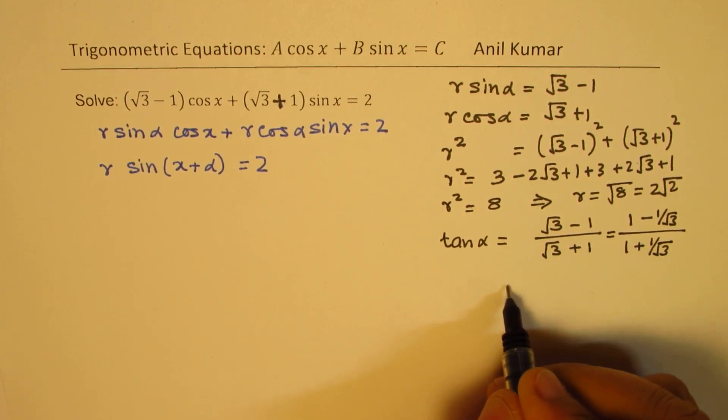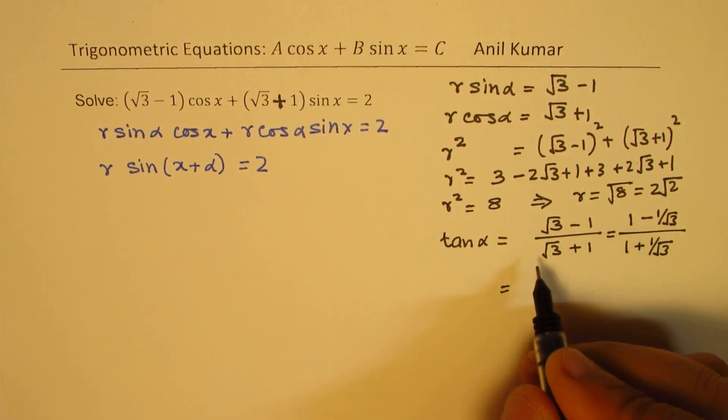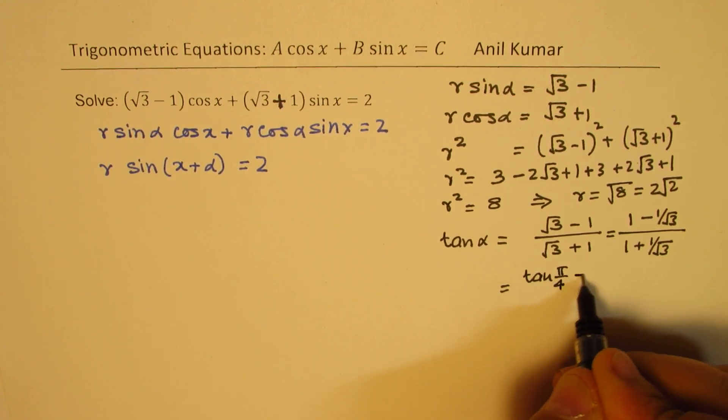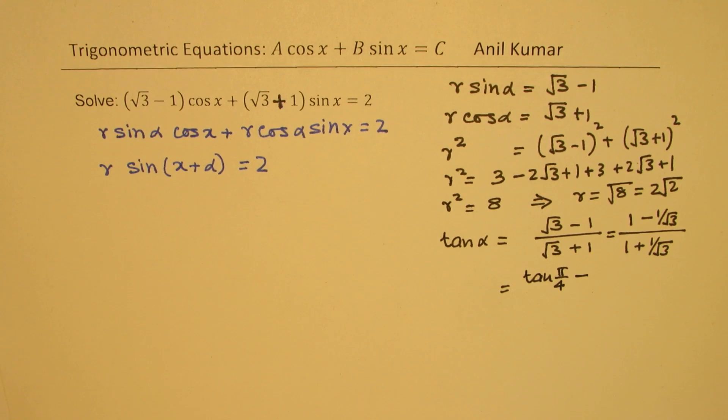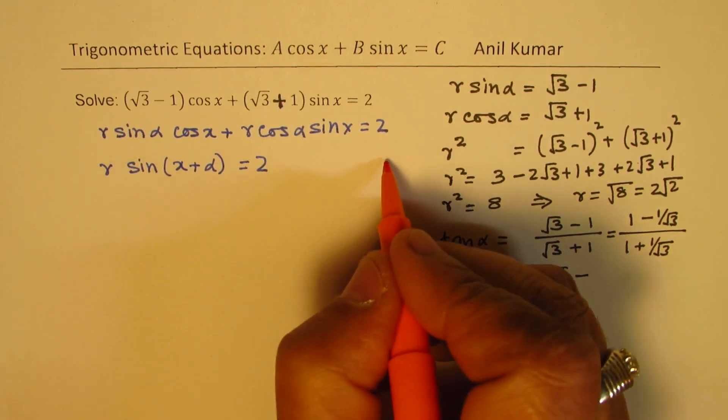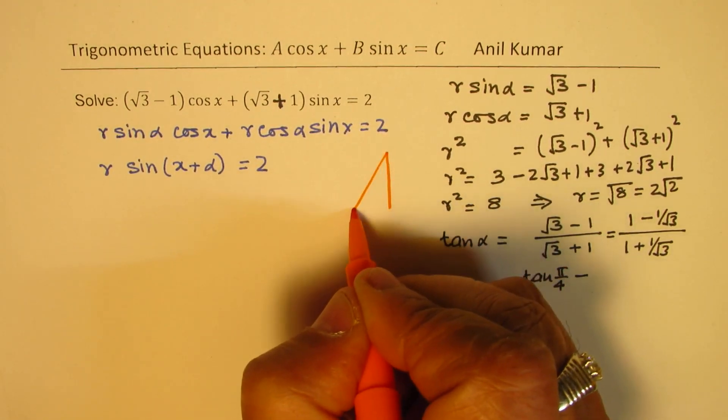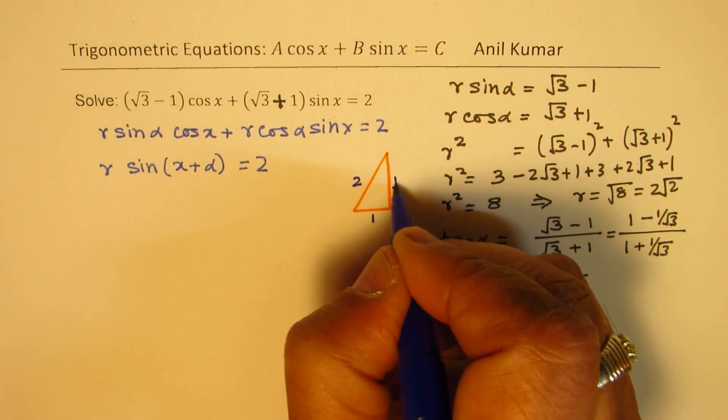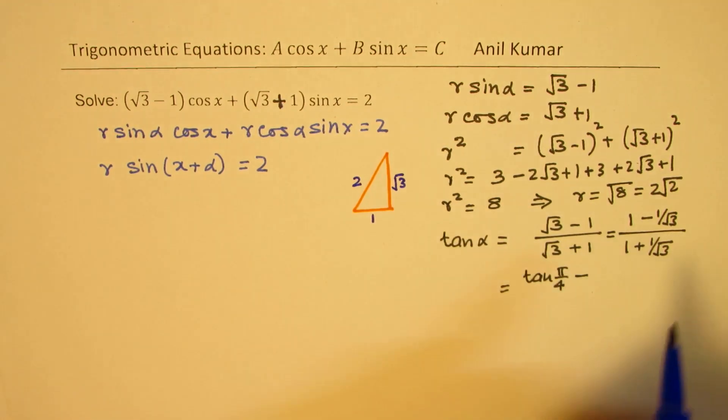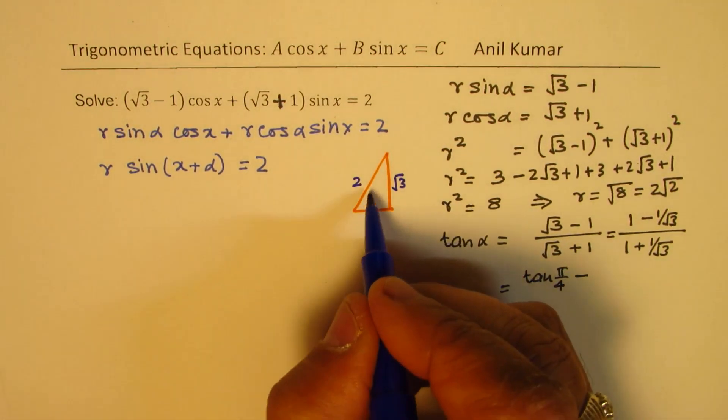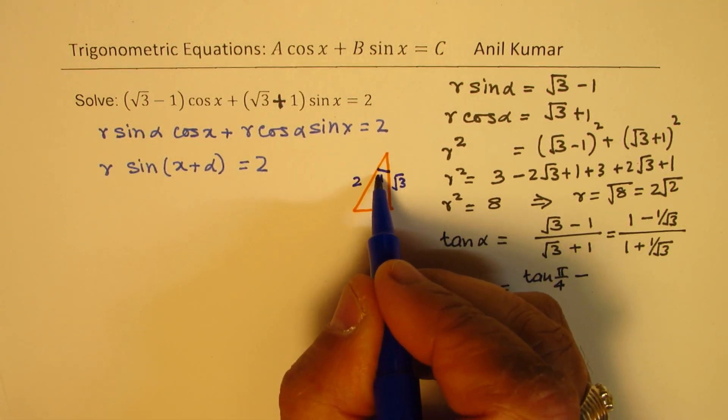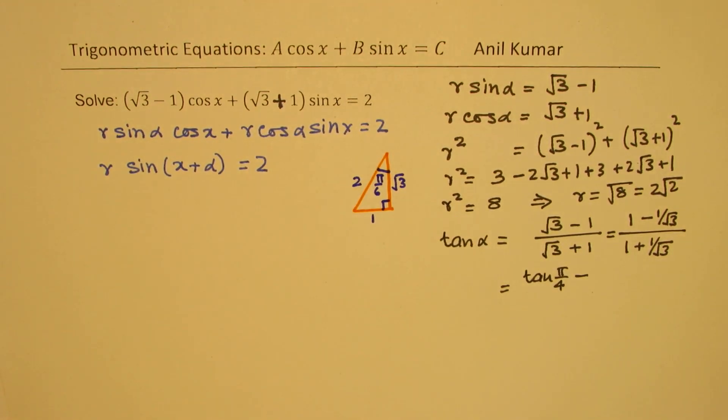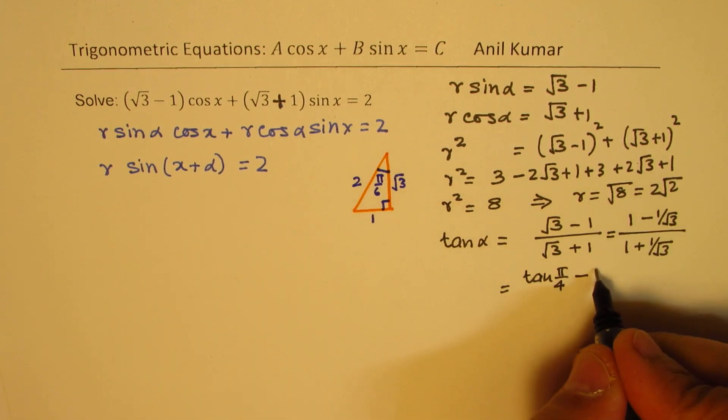Now that reminds you: 1 is tan of pi by 4. Minus 1 over square root 3, you can use your special triangles. So in a special triangle, you know the sides are 1 to square root of 3. We're talking about 1 over square root 3, so we'll look into this angle which is pi by 6. So we get tan of pi by 6.